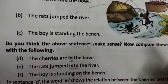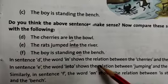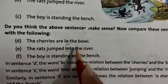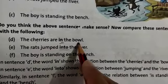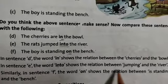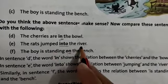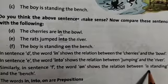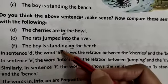These are the words we used to complete the sentence — the preposition words. There are many preposition words we will read in this chapter. In sentence D, the word 'in' shows the relation between the cherries and the bowl. The word 'into' shows the relation between the jumping and the river. Similarly, the word 'on' shows the relation between 'is standing' and the bench.